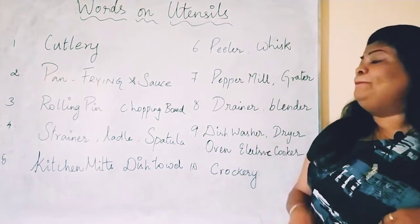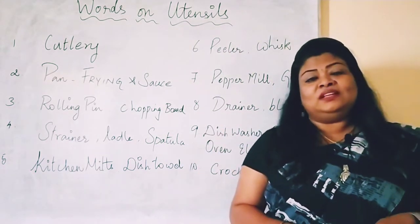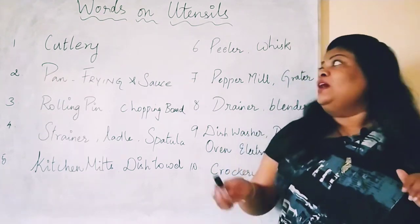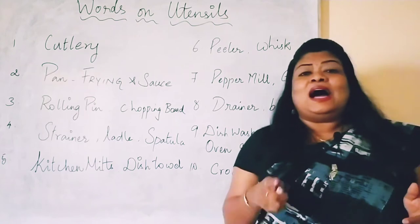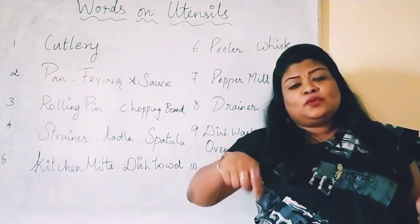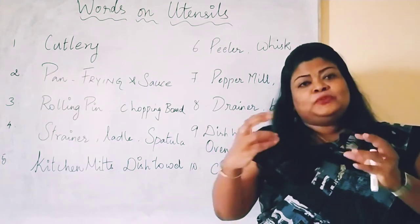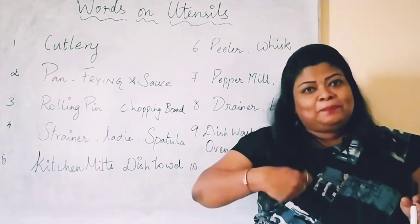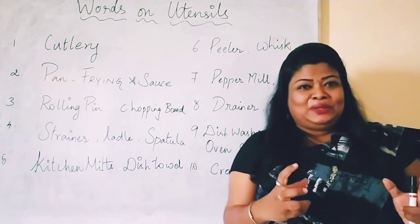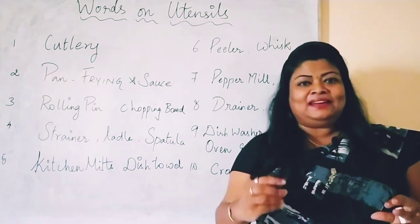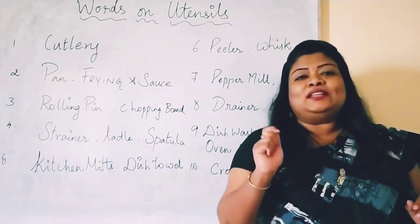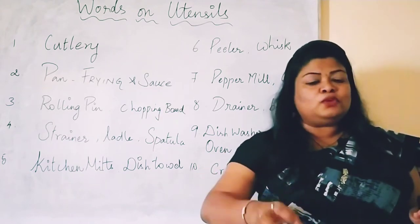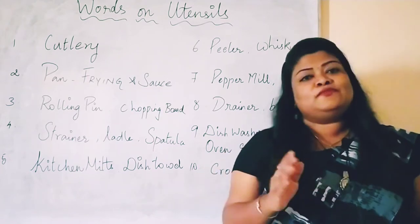Peeler — I already explained to you about the peeler. It's what you use for removing the skin of vegetables. Now, whisk. We use a whisk as an instrument for whisking. Mainly, it is an egg beater — but what is the name of the instrument? Whisk. When we say whisk, we use it to beat eggs. Again, for cream or for cakes, we also use the whisk.